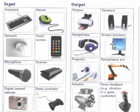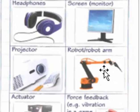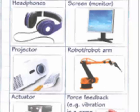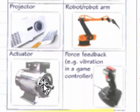Output devices take information from the CPU and produce output for humans or other machines to use. Printer — prints hard copy. Headphones and speakers — sound output. Screens — visual, graphic output. Projector — also visual. Robotic arm has electronic signals, and these are turned into mechanical movements using motors and other devices. So they are called actuators — actuators act on the signals to turn them into real-life movement.